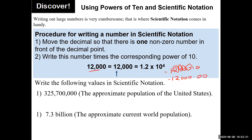So for 12,000 — written as 12,000.0 — we move the decimal point four places to the left so that it comes after the first non-zero digit, giving us 1.2. We moved four times, so we have 1.2 × 10 to the power of 4.